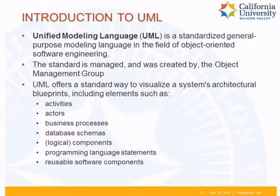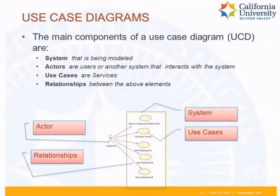Just like a building architect uses exact measurements and codes to interact with clients and builders, computer scientists and engineers can use UML to formally describe system architecture. The UML capability used to gather requirements are called use case diagrams. UCDs allow you to describe the model of a system, the services the system offers, and how users or other systems interact with your system.